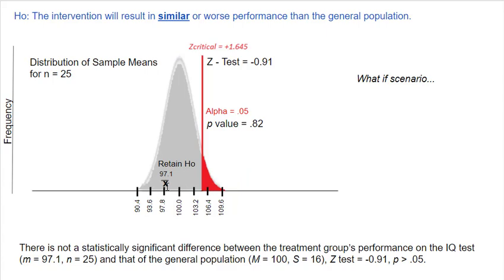Here we have a sample mean of 97.1, which is below 100. We said this diet would improve IQ test performance, but here these people did worse. The null hypothesis says the intervention will result in similar or worse performance, so 97.1 falls under worse performance. No matter how extreme the sample mean gets in the negative direction, it still meets that criteria. For a sample mean of 97.1, the Z test is negative 0.91 — almost one standard error below — and the p-value is 0.82, meaning getting a sample mean in this range happens 82% of the time.